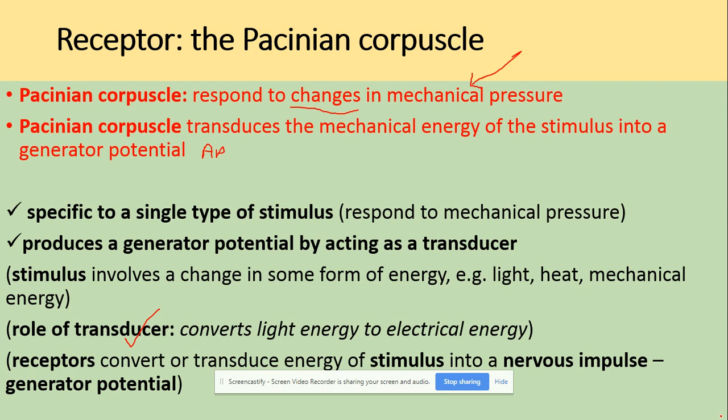The job of the transducer is to convert one form of energy into another — for example, light energy to electrical energy. Here, the Pacinian Corpuscle is a transducer because it transduces the mechanical energy of the stimulus into a generator potential, changing one form into the other. It's specific to a single type of stimulus — only mechanical pressure — and produces the generator potential by acting as this transducer.